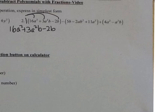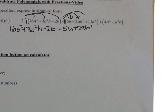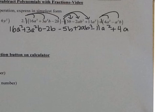Now I distribute — there's really a negative 1 here. So it's going to be negative 5b. Negative times a negative is a positive 2ab squared. Distributing the negative to a positive gives negative 11a squared. And there's really a positive 1 on the last parenthesis; when I distribute the positive 1, it keeps everything the same. So that would be 4a squared minus a squared b.